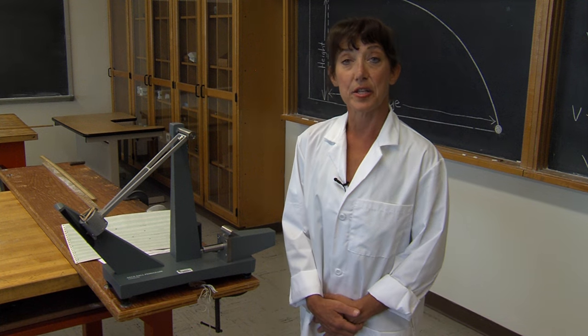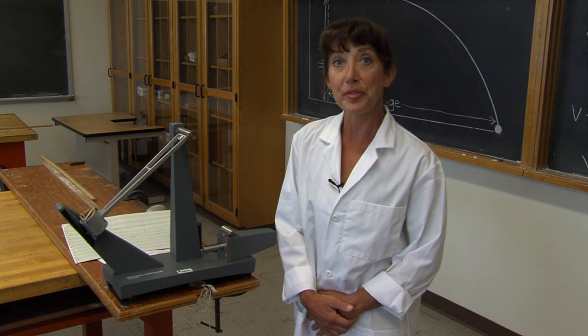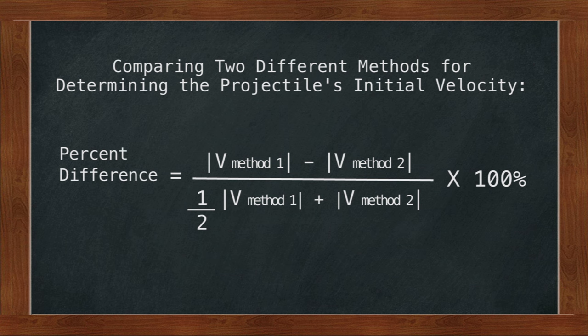Now that we've calculated the projectile's velocity using a second method, you will want to compare your two values. To do so, you will compute the percent difference, which is simply the difference over the average. Your instructor will give you some specific details on how to do so.